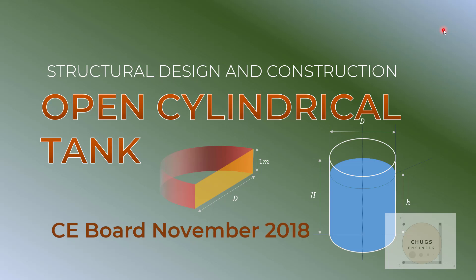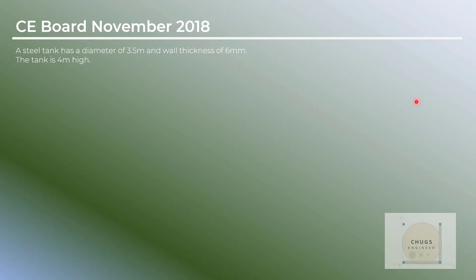We have here another topic about the open cylindrical tank. This is a board problem from November 2018 under Structural Design and Construction. The steel tank has a diameter of 3.5 meters, a wall thickness of 6 millimeters, and the tank is 4 meters high.